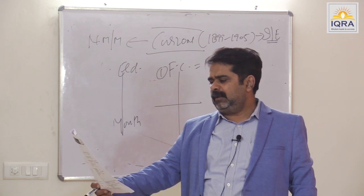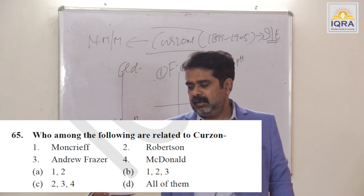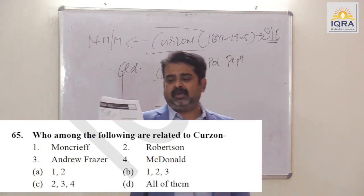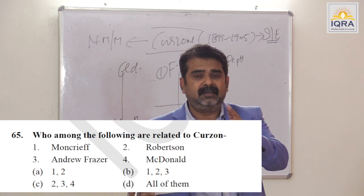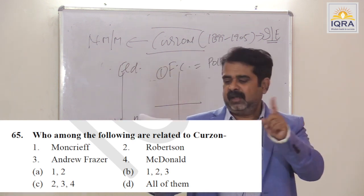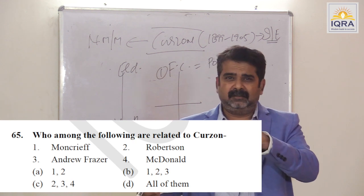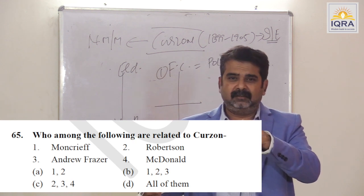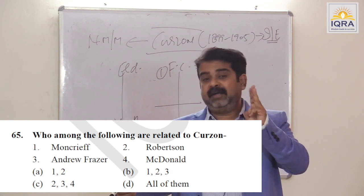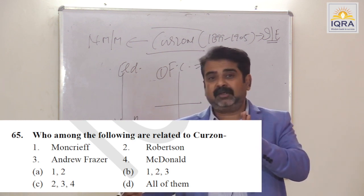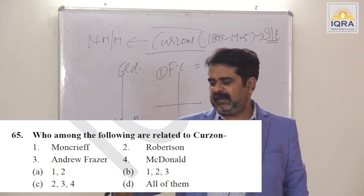Who among the following are related to Curzon? Moncrieff — commission related to irrigation. Robertson — railway expert who did railway reforms in India. Andrew Fraser — police commission. Macdonald — famine. Answer is D — all of them.